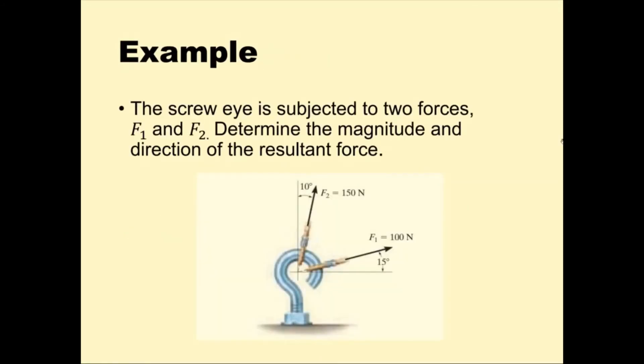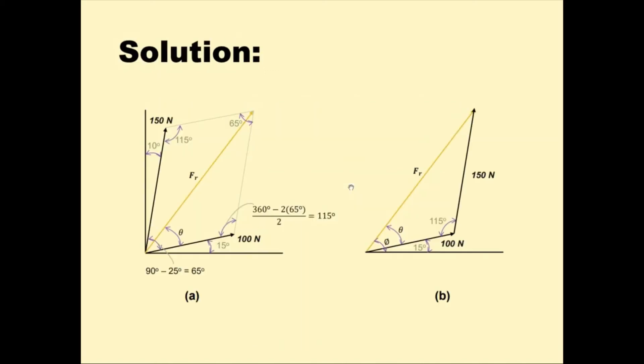Now, let's answer this problem. The screw eye is subjected to two forces F1 and F2. Determine the magnitude and direction of the resultant force. Given are the values of F1 and F2, which are 100 N and 150 N. There are also two angles given, which are 15 degrees and 10 degrees. Using the parallelogram law, this is how it looks, and this is the triangle rule.